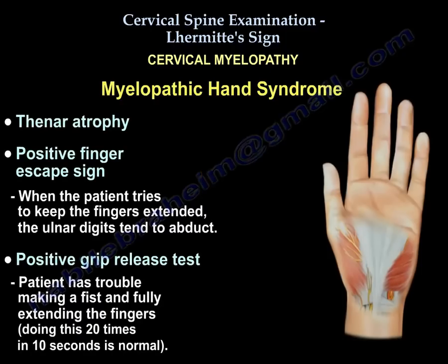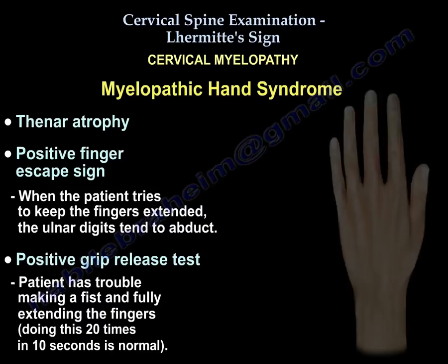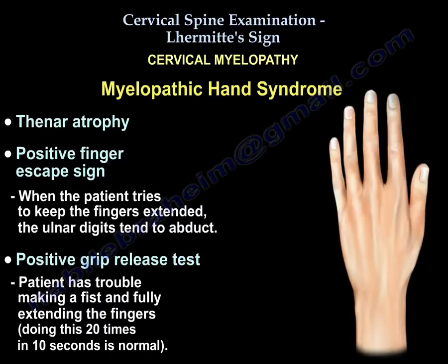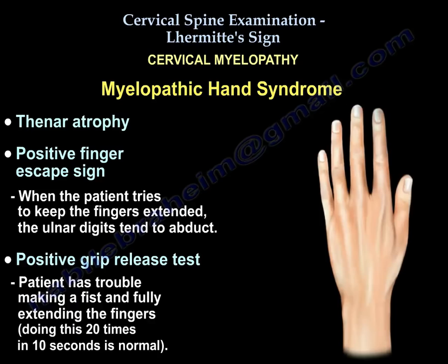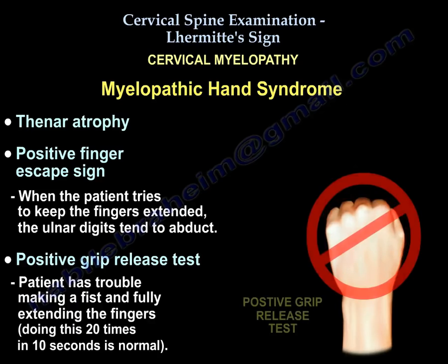Regarding myelopathic hand syndrome: the patient will have thenar atrophy and a positive finger escape sign — when the patient tries to keep the fingers extended, the ulnar digits tend to abduct. In the positive grip and release test, the patient will be unable to make a fist and release 20 times in 10 seconds.